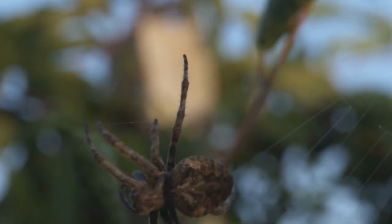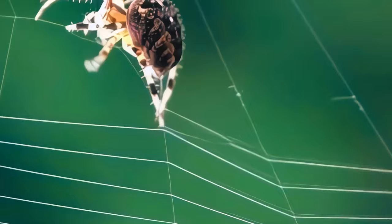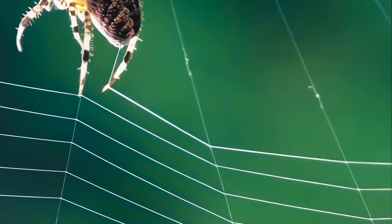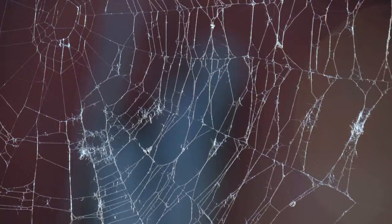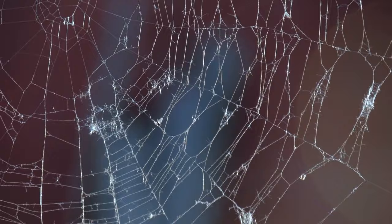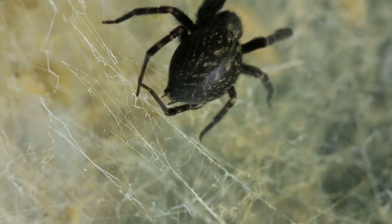If you've ever observed a spider on its web, you must have noticed how attentively it responds to even the slightest vibrations. It turns out that spider silk can be finely adjusted to different sound frequencies, unlike any other material. When a spider builds its web, it doesn't just spin the silk and leave it as it is. The spider actually makes adjustments to the silk by changing how tight or loose it is and how different threads are connected.